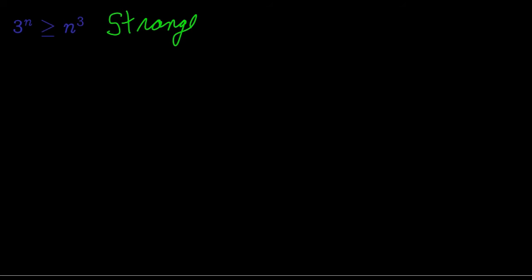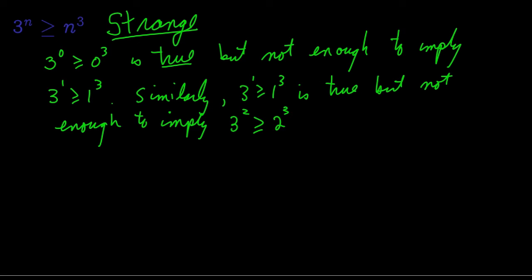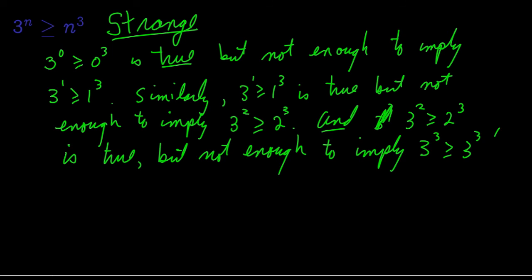Here's a strange thing. Although 3 to the 0 is greater than 0 cubed is true, it's not enough to show that 3 to the 1 is greater than or equal to 1 cubed. Similarly, 3 to the 1 greater than or equal to 1 cubed is true, but not enough to show that 3 squared is greater than or equal to 2 cubed. And 3 squared greater than or equal to 2 cubed is true, but not enough to show that 3 cubed is greater than or equal to 3 cubed. We need 4 base cases: 0, 1, 2, and 3.